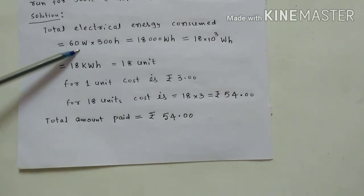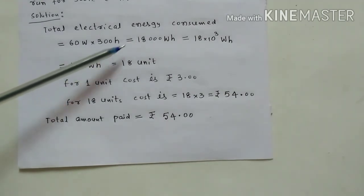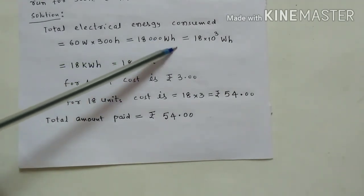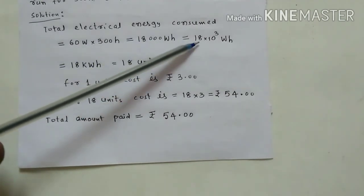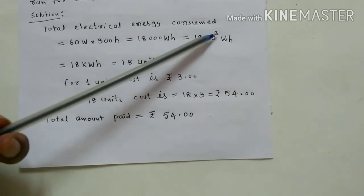So total electrical energy consumed: 60 watt bulb, so 60 watt into how much time? 300 hour. So it is 18,000 watt hour, 18 into 10 to the power of 3 watt hour. So 10 power 3 is kilo, so kilowatt hour.